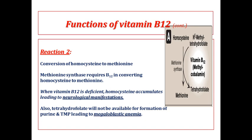The second important reaction: vitamin B12 helps conversion of homocysteine into methionine. When vitamin B12 is deficient, homocysteine accumulates — a very toxic product — leading to neurological manifestations. Also, tetrahydrofolate will not be available for formation of purines and thymidine phosphate, leading to megaloblastic anemia. Purines and thymidine phosphate are essential for DNA synthesis — decreased DNA synthesis means decreased cell division and causes megaloblastic anemia.